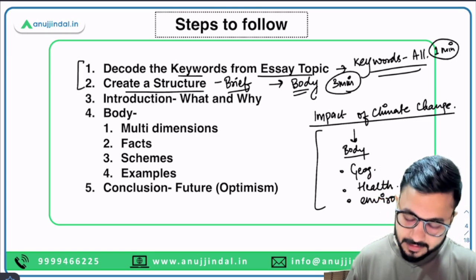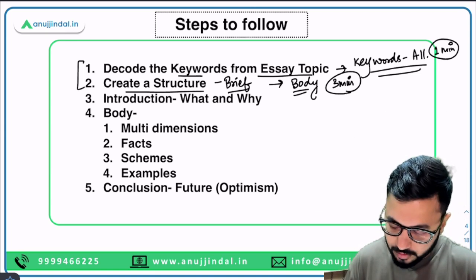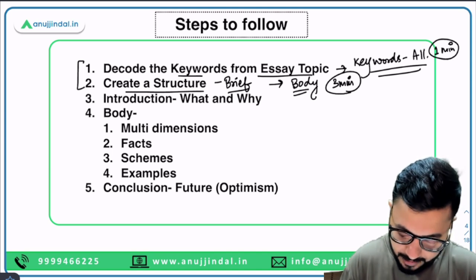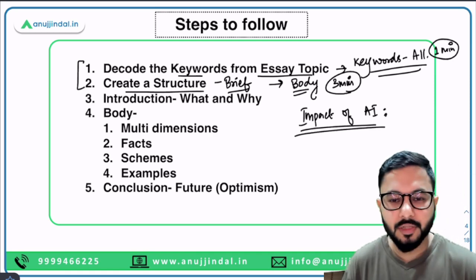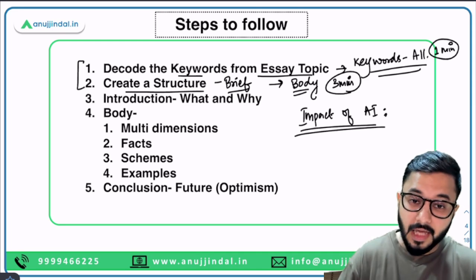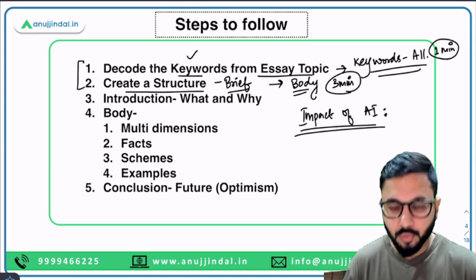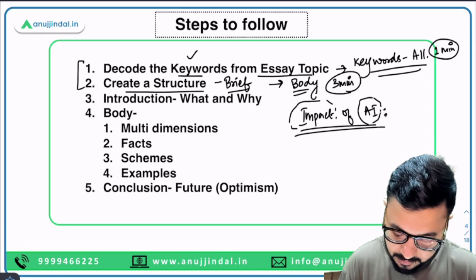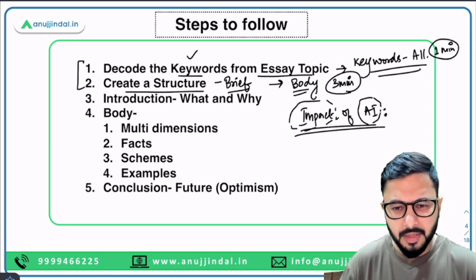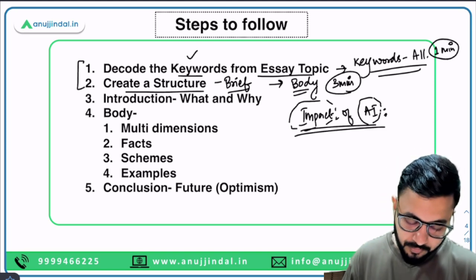Let's say you've decided to write your essay on the impact of AI rather than climate change, because you have the most number of points for it. Now again you repeat step one and step two. Step one: decode the keywords. For 'impact of AI,' the two major keywords are 'AI' and 'impact.' Then again you create a structure — and this time the structure is going to be longer.